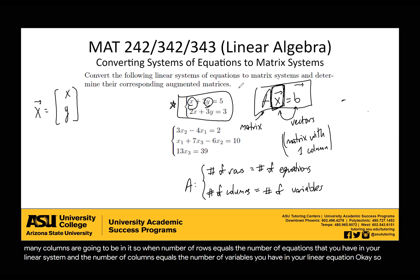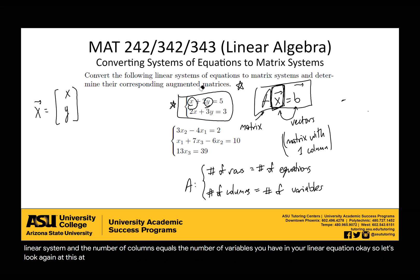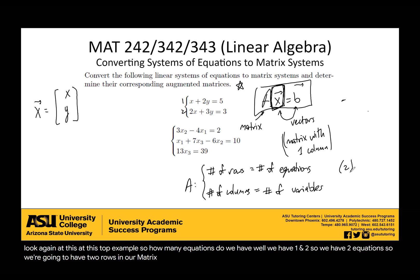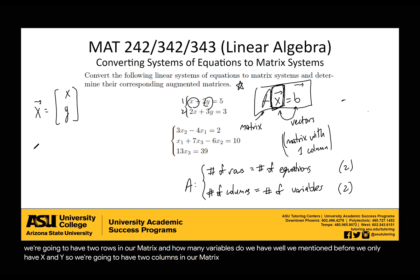So let's look at this top example. How many equations do we have? We have one and two, so we have two equations. So we're going to have two rows in our matrix. And how many variables do we have? We mentioned it before, we only have x and y. So we're going to have two columns in our matrix. So A is going to be a two by two matrix.